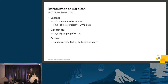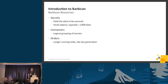Barbican also has containers — basically logical groupings of secrets. If you store a TLS key pair in there, the container will have a reference to a secret with the private key and a reference to a secret with the certificate. This gives you one unit you can fetch, which gives you the URLs for the rest of what you need.